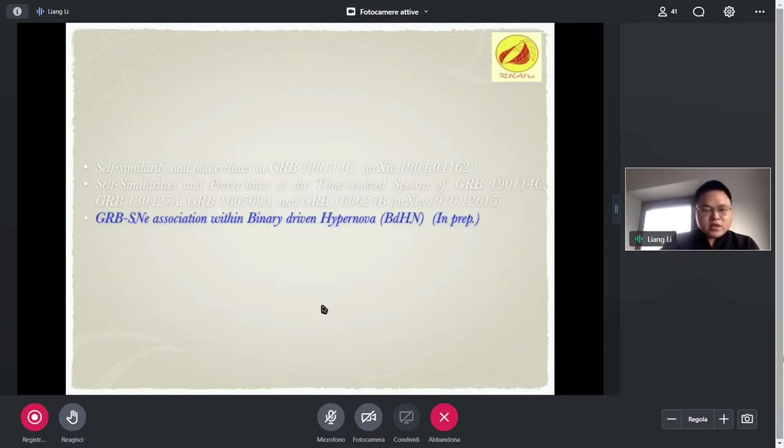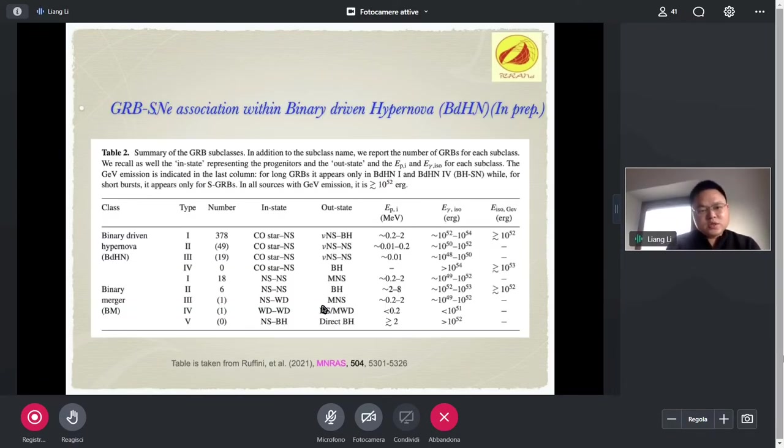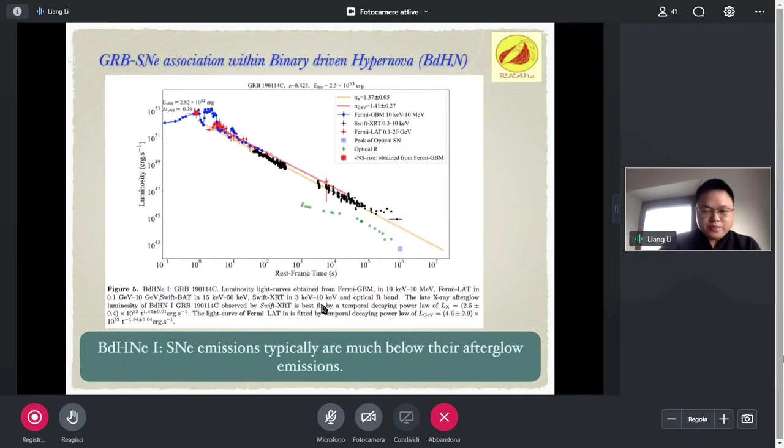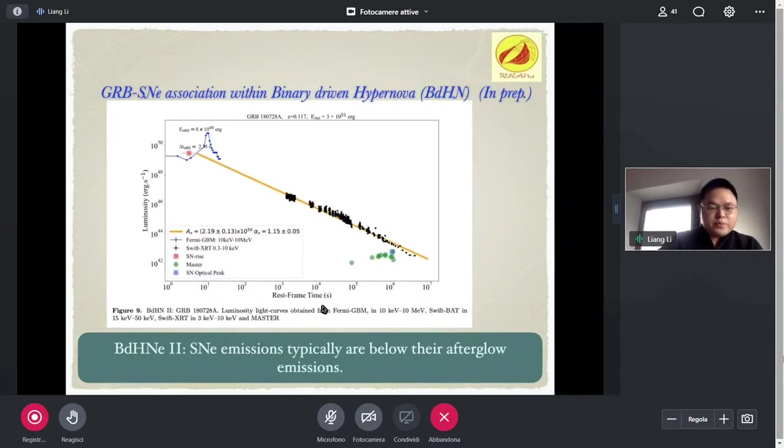This is the last part. We wanted to briefly introduce one recent work in our team. In this project, we wanted to study connection between a sample of the supernova-GRB and the family of bursts. We first found that for the BdHN1, the supernova emission is much below their afterglow emissions. For BdHN2 family, of course, the supernova emission is slightly below the afterglow emissions. Yeah, probably enough. The BdHN3, the supernova is above. This is enough. Just leave time to the questions.